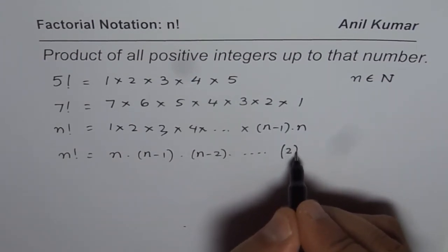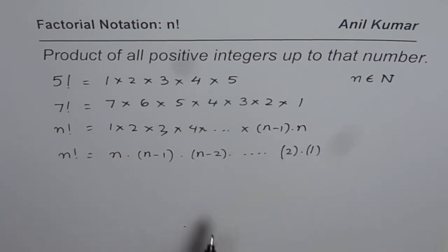So it could be times 2 and then till 1, so up to 1. So 1 to n or n to 1 is one and the same thing.